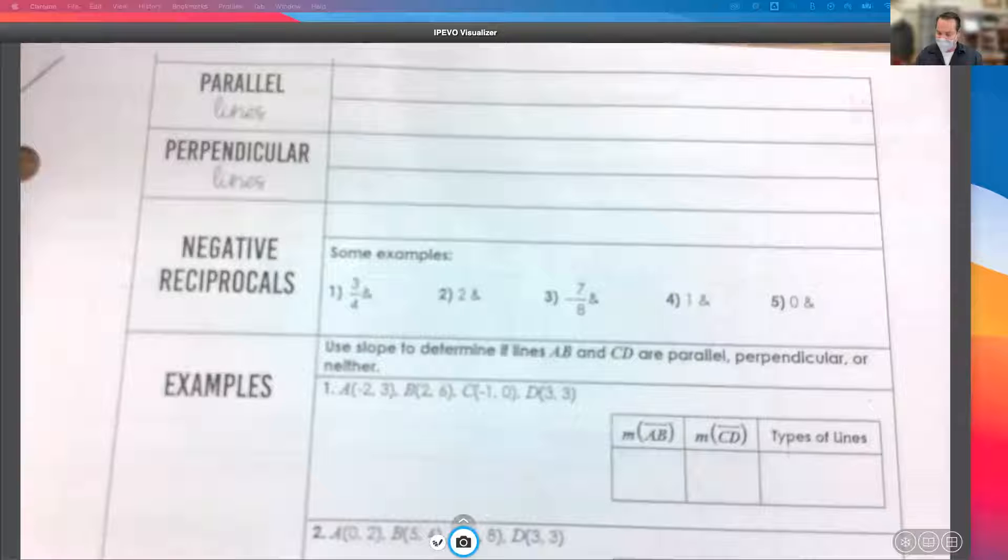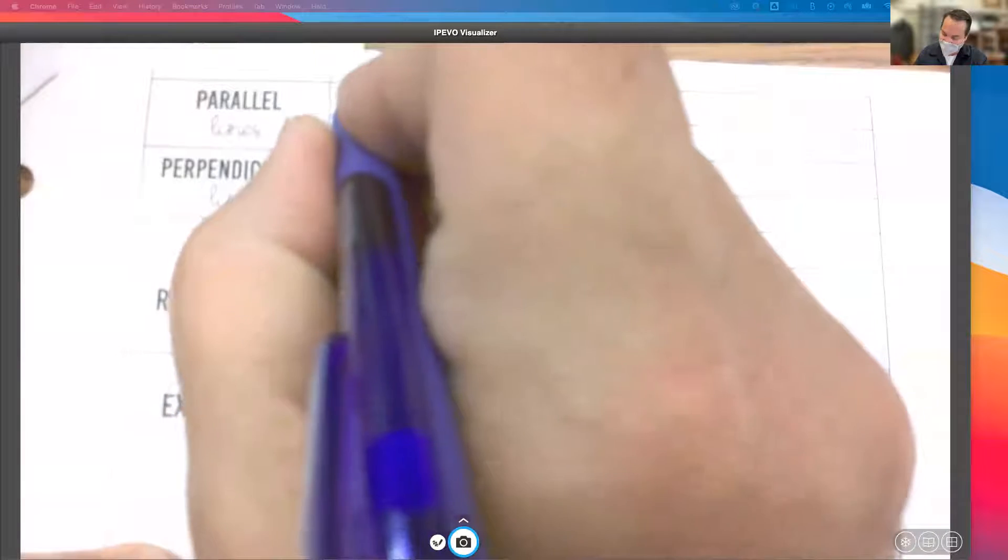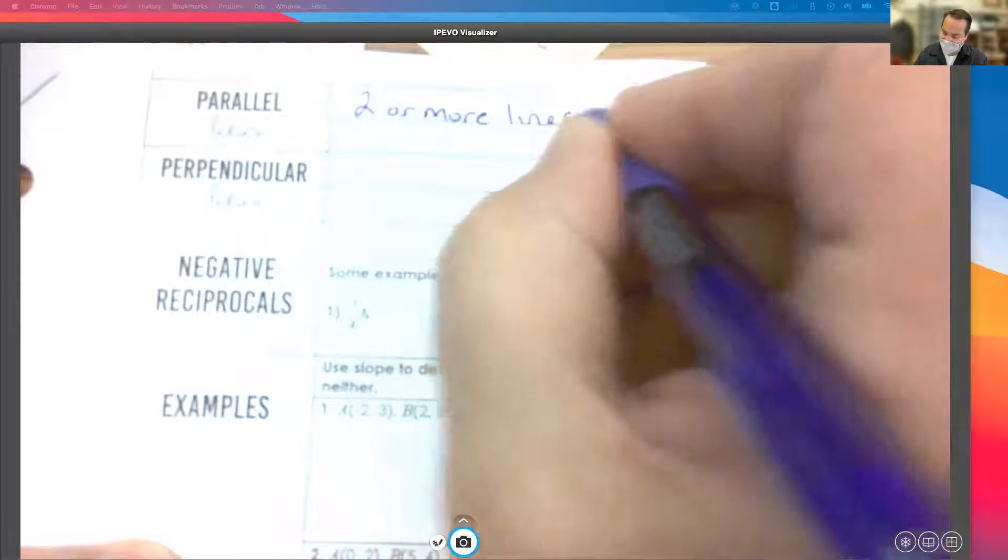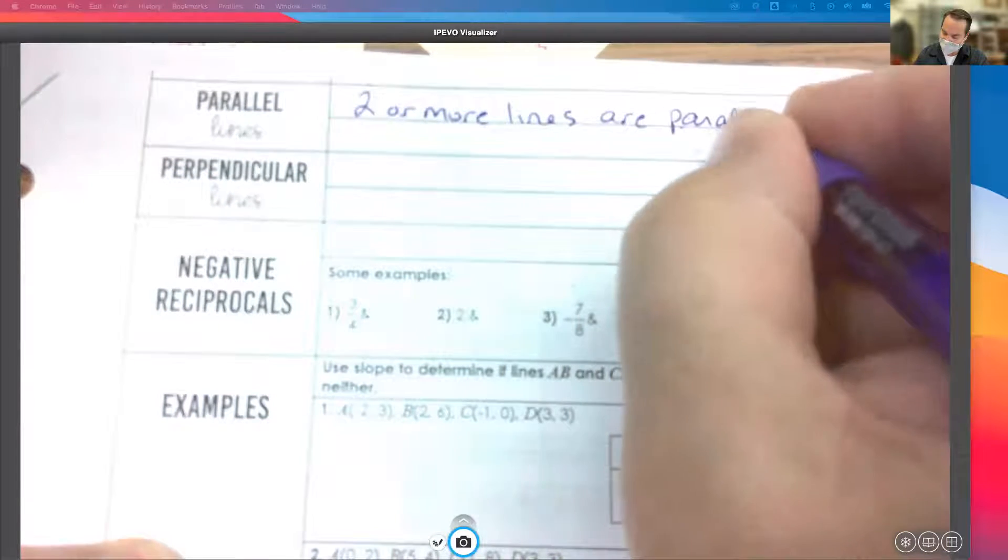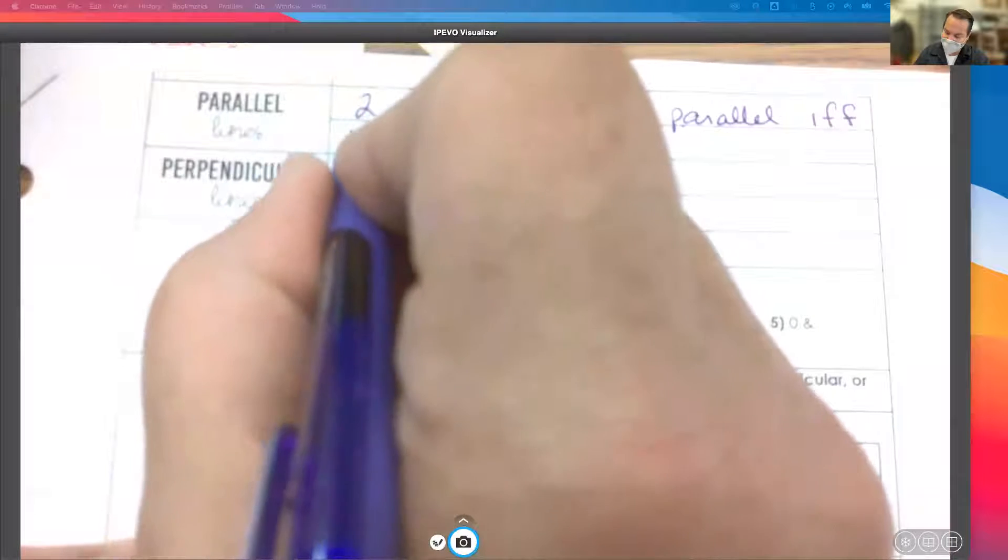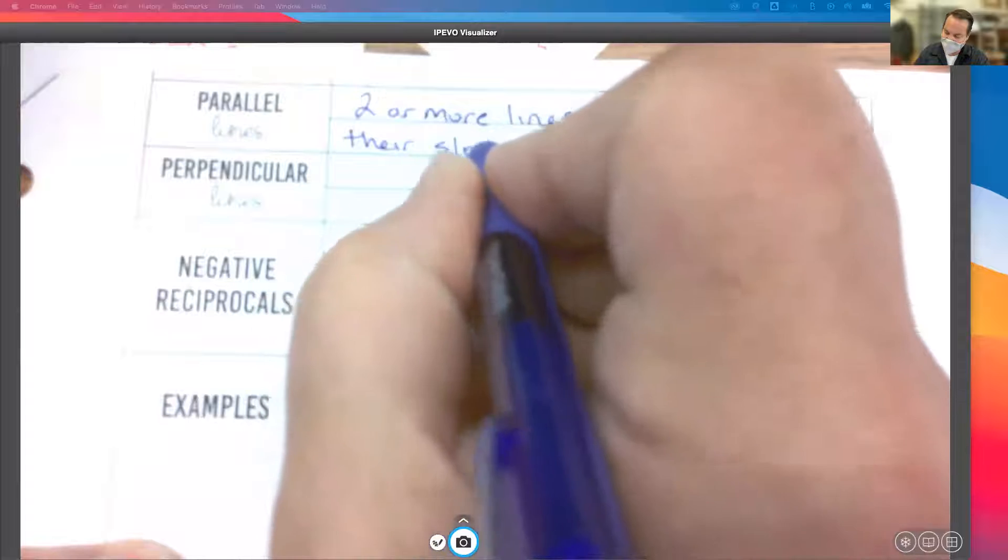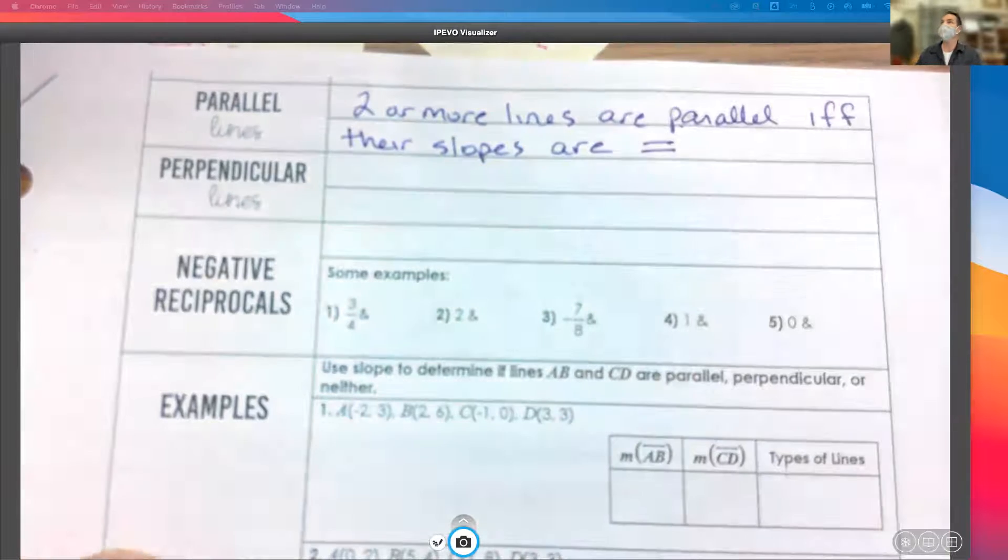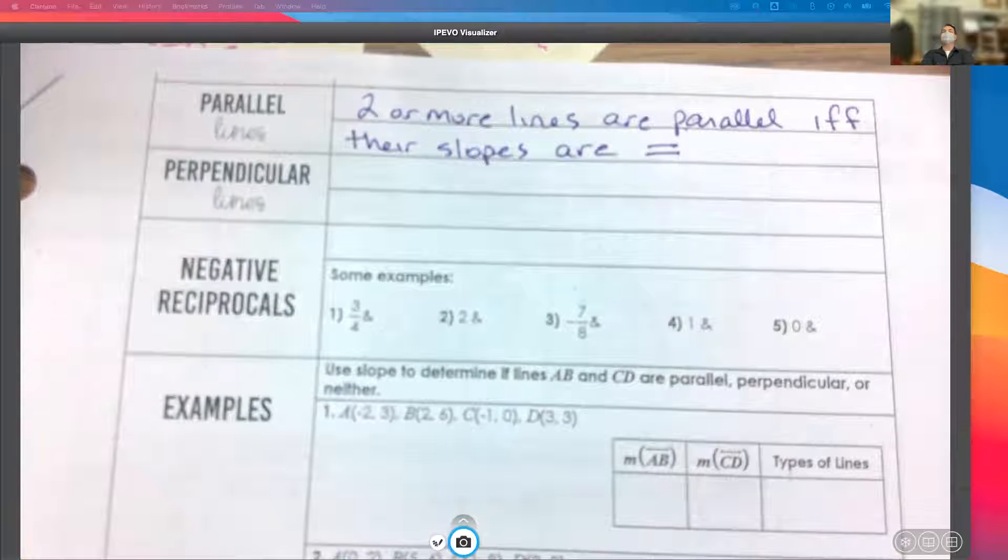We're going to begin with, what is parallel lines? What does it mean? Two or more lines are parallel if, if and only if, what does that mean? It's a bi-conditional. So I'm telling you it's a valid bi-conditional, which means it's also a good definition. If they have the same slope, then they are parallel.